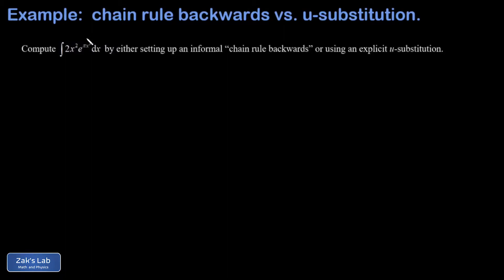In the informal approach, we recognize that we have a function of a function—that's e to some complicated function πx³. The inner function is πx³, and we notice that we essentially have the derivative of that sitting right next to the exponential piece. We can recognize this as the chain rule operating on the anti-derivative.